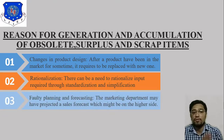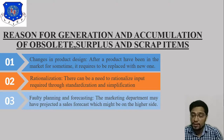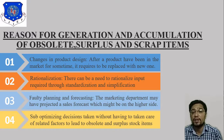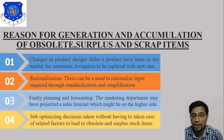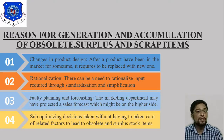The third reason is faulty planning and forecasting. The marketing department may have projected a sales forecast on the higher side. Sub-optimizing decisions taken without considering related factors lead to obsolete and surplus stock items. This is the concept of faulty planning and forecasting.